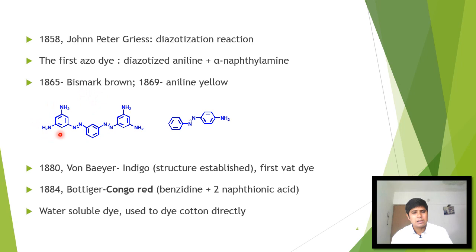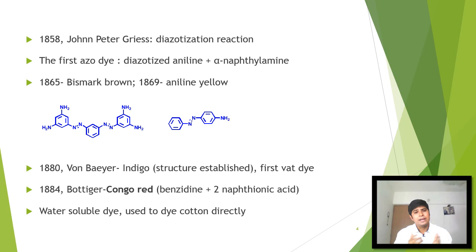Later, Bismarck Brown dye was synthesized, and in 1869 aniline yellow dye was synthesized. In 1880, the scientist Baeyer established the structure of indigo dye. Indigo dye had been used since ancient times, but its structure had not been established until 1880. Following this, many indigoid-type dyes came into the picture.